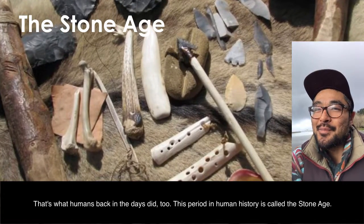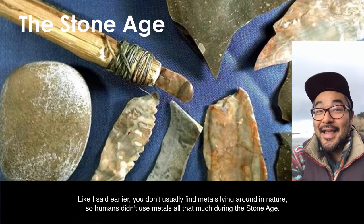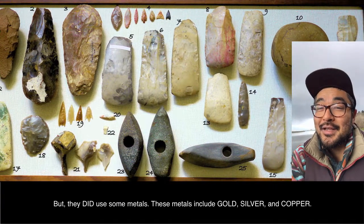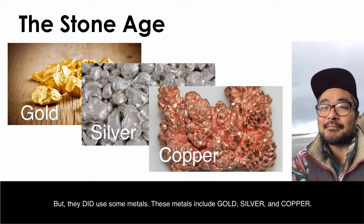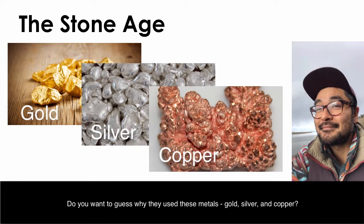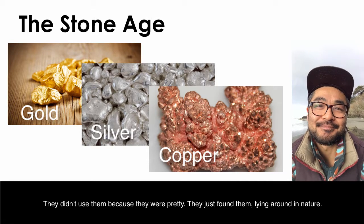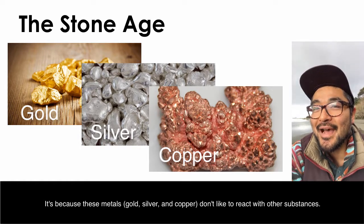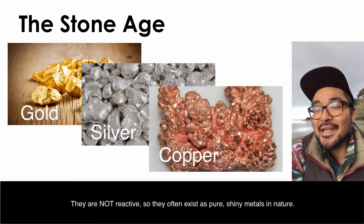This period in human history is called the Stone Age. Like I said earlier, you don't usually find metals lying around in nature, so humans didn't use metals all that much during the Stone Age. But they did use some metals — gold, silver, and copper. They didn't use them because they were pretty; they just found them lying around in nature. It's because these metals don't like to react with other substances — they are not reactive. So they often exist as pure shiny metals in nature.